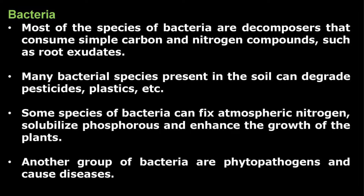The first and predominant microbes are bacteria. Most species of bacteria are decomposers that consume simple carbon and nitrogen compounds such as root exudates. Many bacterial species in the soil can degrade pesticides, plastics, etc. Some species can fix atmospheric nitrogen, solubilize phosphorus, and enhance the growth of plants. Another group of bacteria are phytopathogens and they can cause diseases.